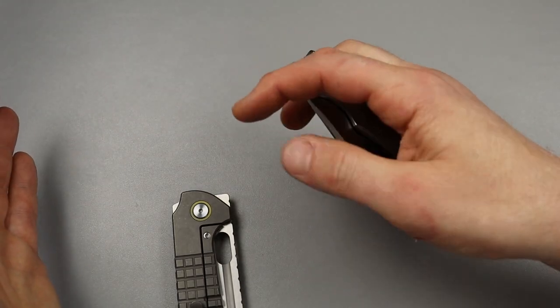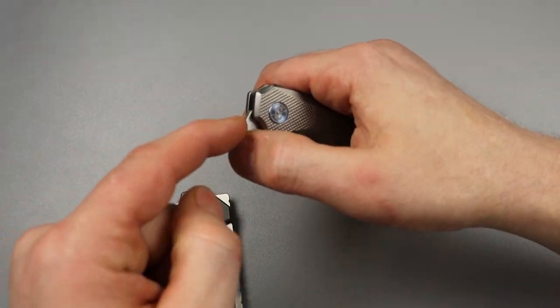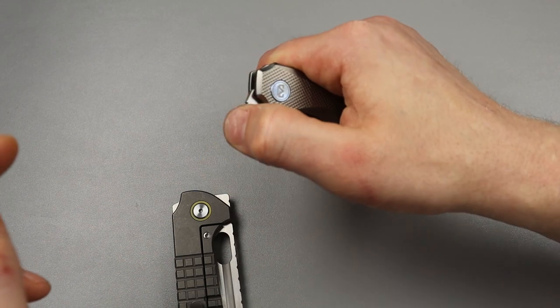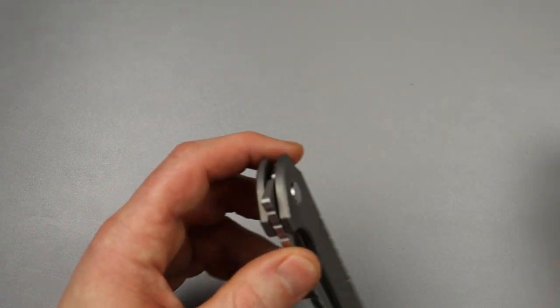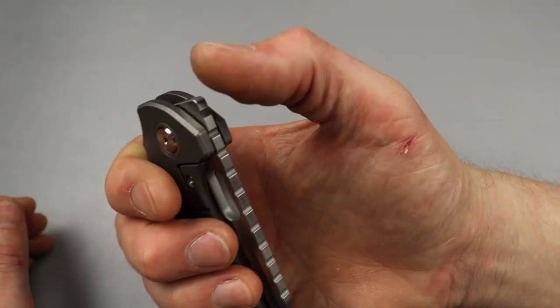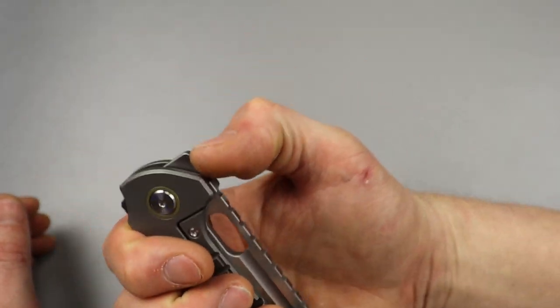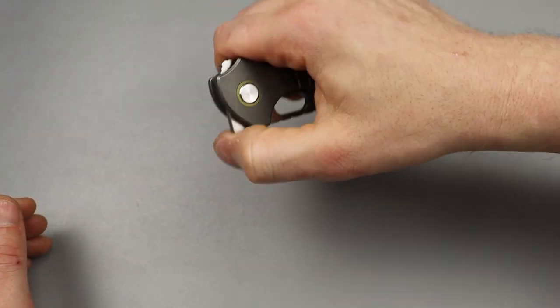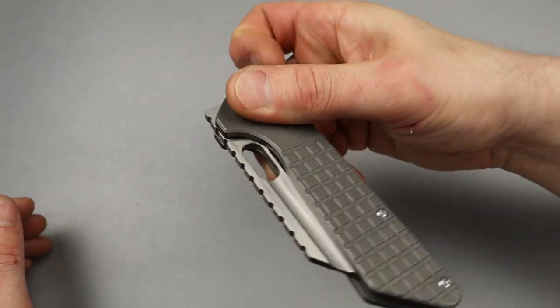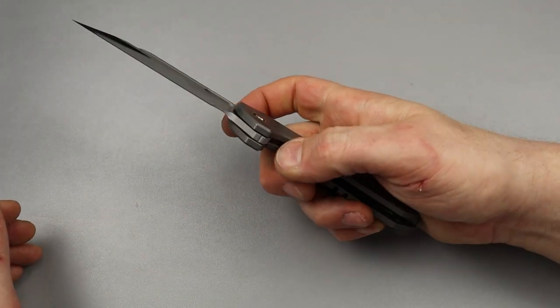See how that jimping goes up and around and it's fine jimping. It grips you back. If you just put your skin on the flipper, it grips you back. And that makes the deployment so much easier with this. If you don't hit that jimping right there, you can slip off of it.